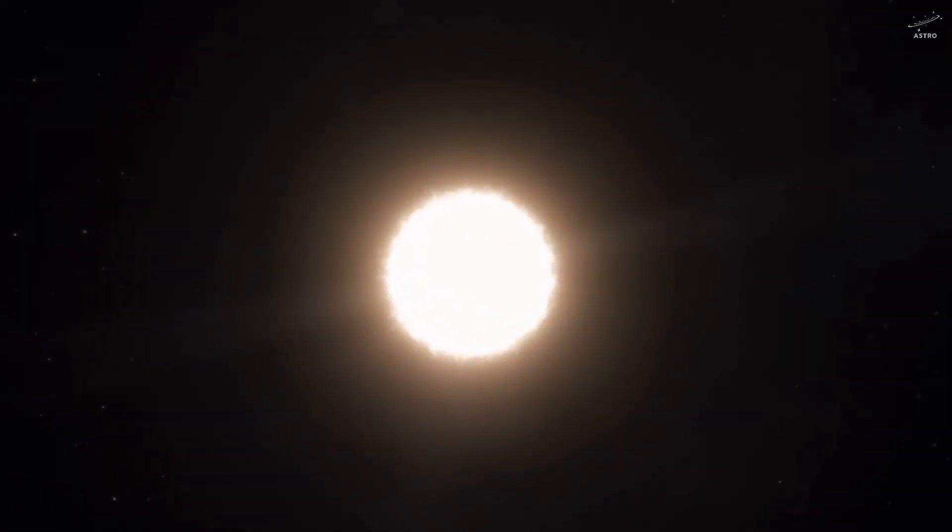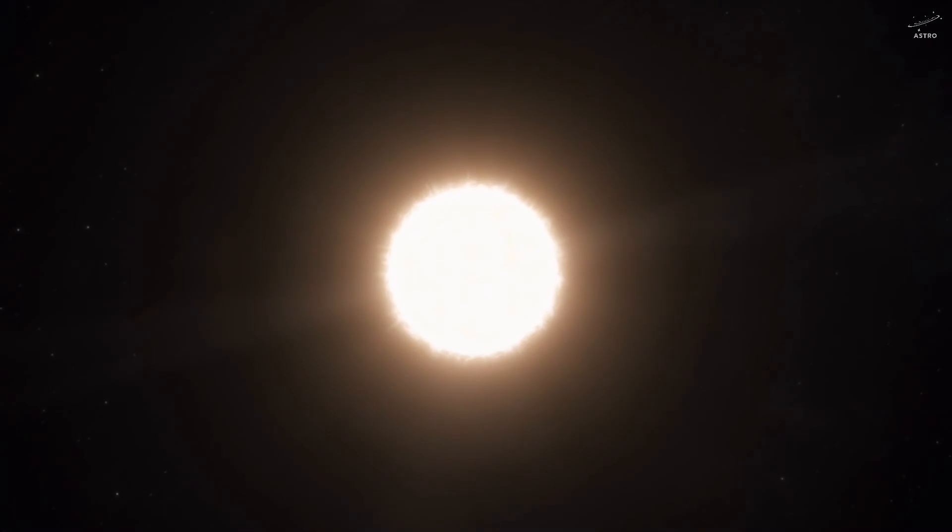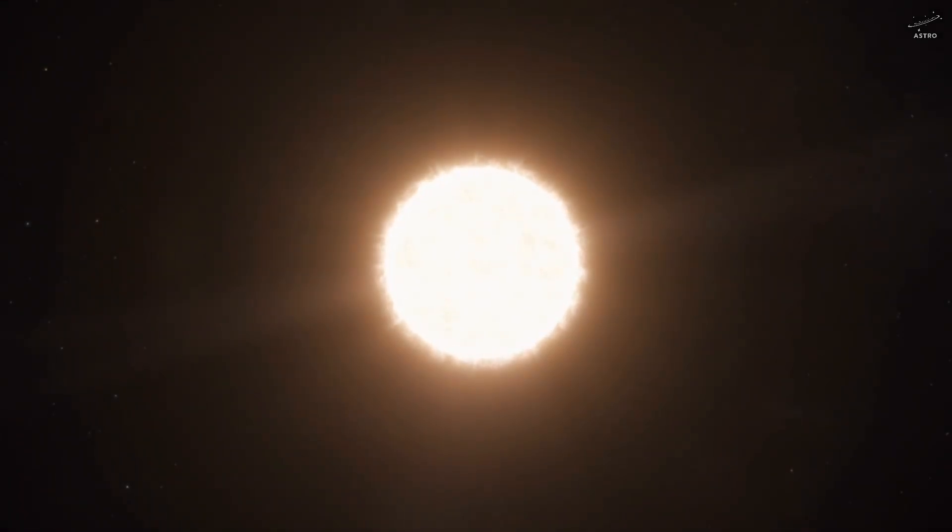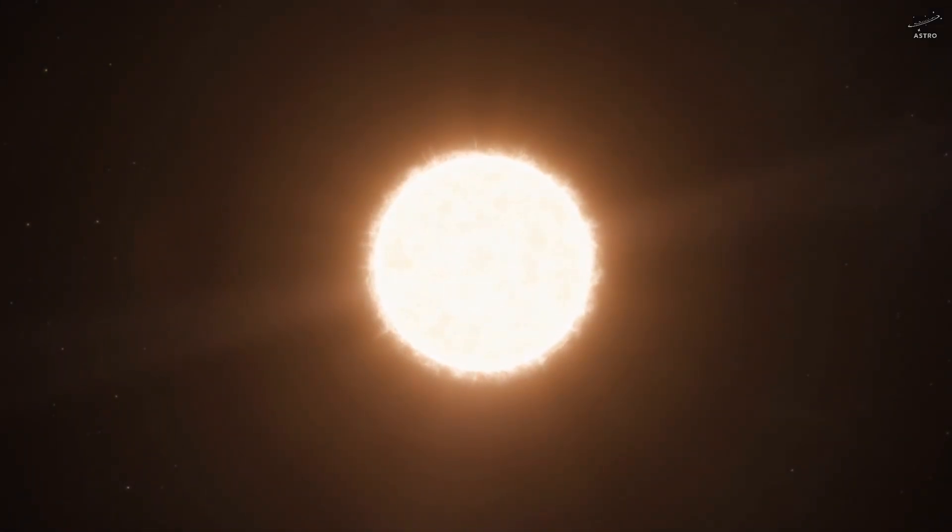And here's the twist. The sun isn't static in this process. As it burns through its hydrogen fuel, the core contracts. The temperature rises. And the sun's outer layers slowly swell outward. That's why, despite losing millions of tons of mass every second, the sun's diameter doesn't shrink. In fact, it actually grows over time.